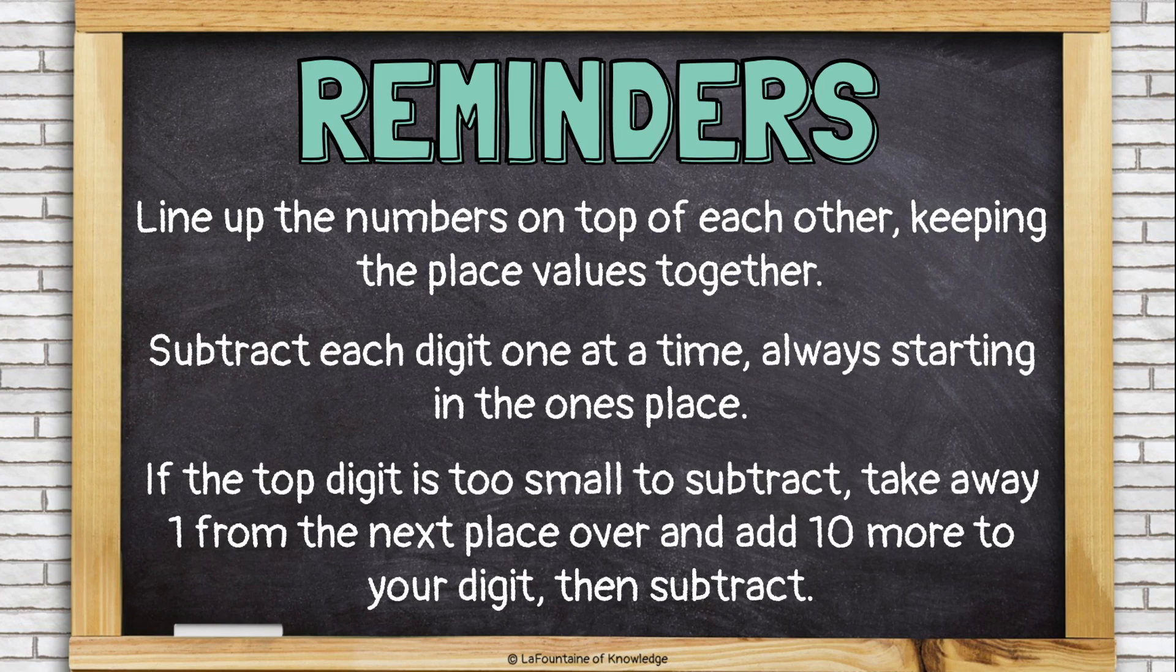If the top digit is too small to subtract, take away one from the next place over and add ten more to your digit, and then subtract. This is called regrouping, or sometimes it's called borrowing.